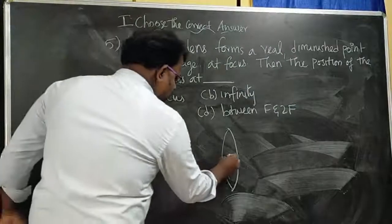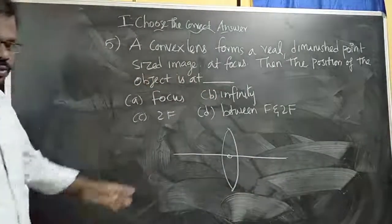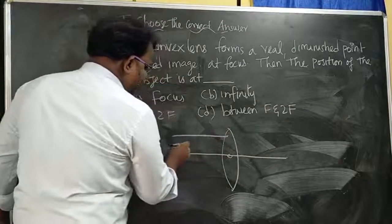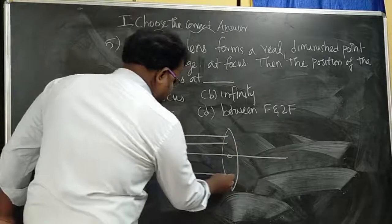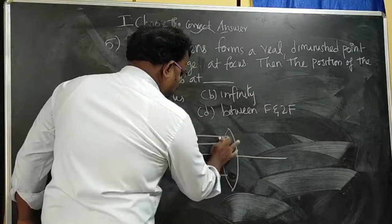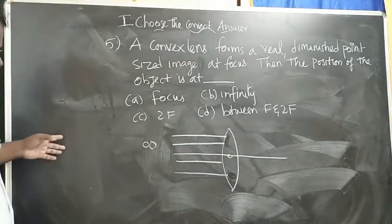For the convex lens, we draw the principal axis through the optical center. Now, at infinite distance, we place an object. A parallel beam of light comes from infinity distance. So the object is at infinity.